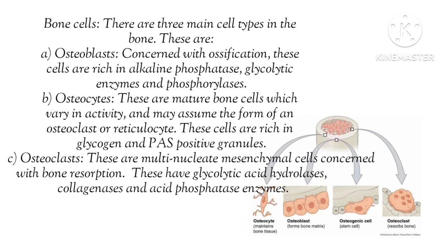There are three main types of bone cells: osteoblasts, osteocytes, and osteoclasts. Osteoblasts are concerned with ossification and are rich in alkaline phosphatase, glycolytic enzymes, and phosphorylase enzymes. Osteocytes are mature bone cells — you can call them bone mother cells — and can give rise to osteoclasts. They are rich in glycogen and PAS-positive granules. Osteoclasts are multinucleated mesenchymal cells responsible for bone resorption. They contain glycolytic acid hydroxylase, collagenase, and acid phosphatase enzymes.